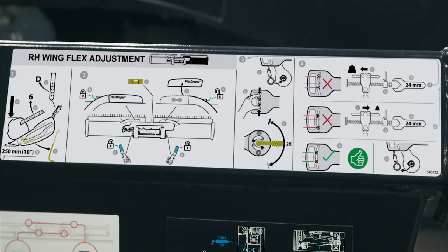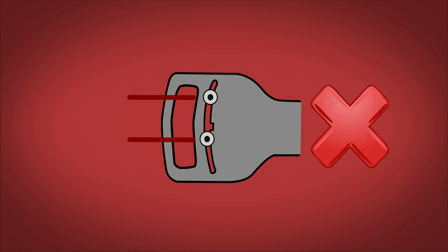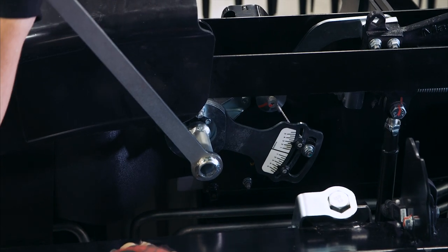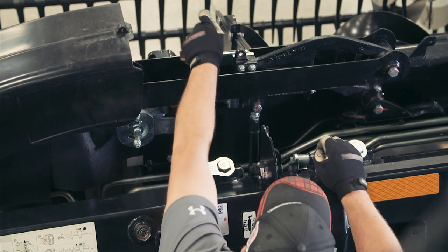Refer to the decal and compare the two readings as follows. Condition A, the wing is too light. Make the wing heavier. Condition B, the wing is too heavy. Make the wing lighter. Condition C, the wing balance is correctly adjusted. Repeat this procedure on the opposite wing. Adjust if necessary.